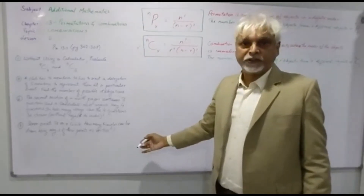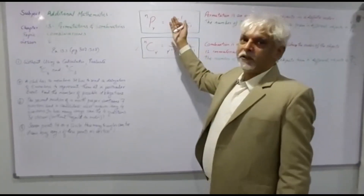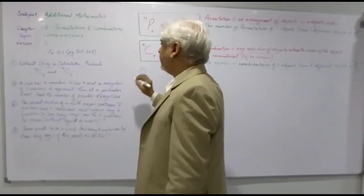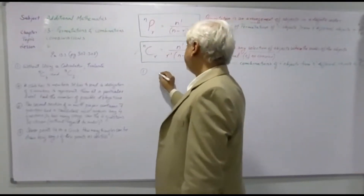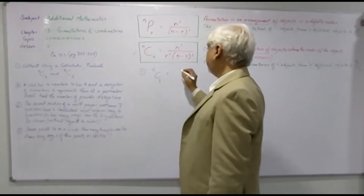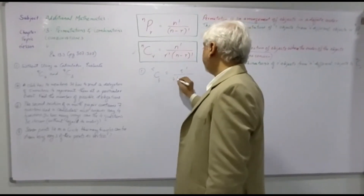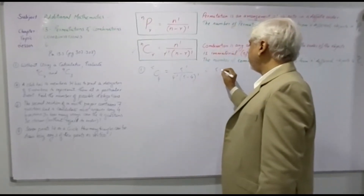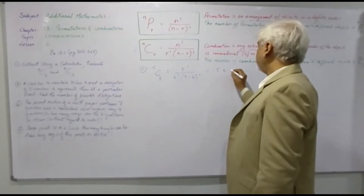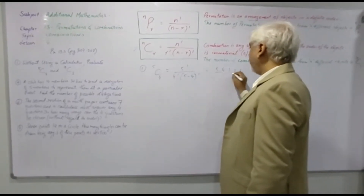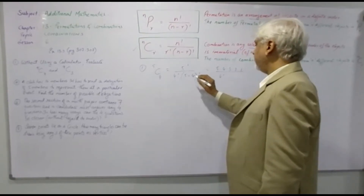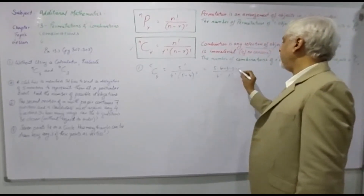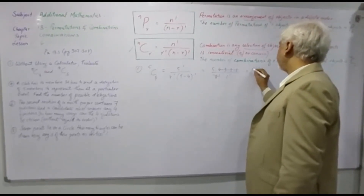We'll be using this formula to solve questions in Exercise 13.3, as we did for Exercise 13.2. Number one says: without using a calculator, evaluate C(5, 4). Using this formula we have 5 factorial upon 4 factorial times (5 minus 4) factorial. 5 factorial gives us 5×4×3×2×1, and (5 minus 4) gives 1 factorial.